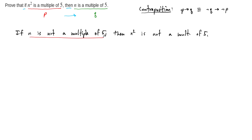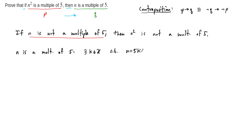If we say that n is not a multiple of 5, we need to be able to write this out in some mathematically significant way. If n is a multiple of 5, this means there exists some integer k such that n is equal to 5 times k. So that's what it means for n to be a multiple of 5.